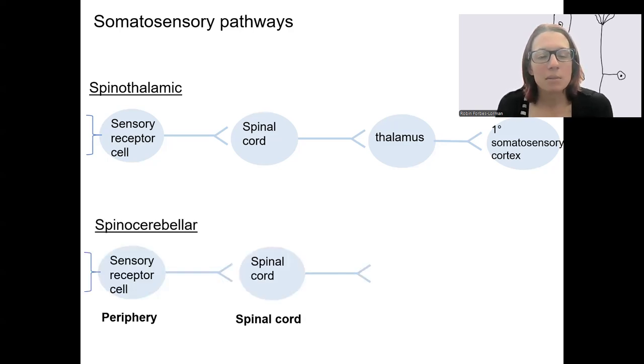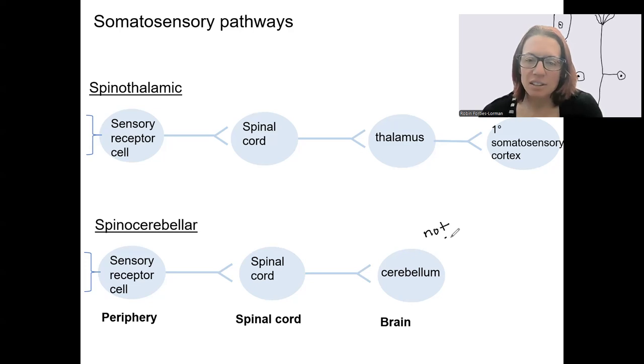The second pathway is the spinocerebellar pathway. It ends in the cerebellum, so this is not perceived because we're not going to the primary cortex.